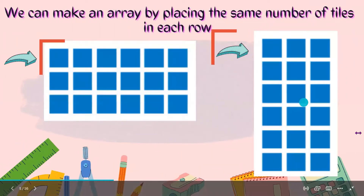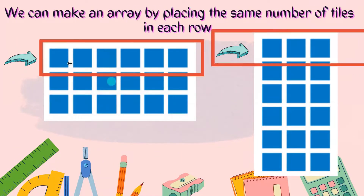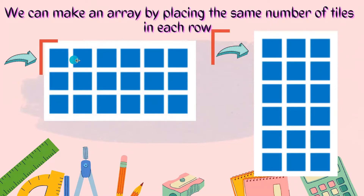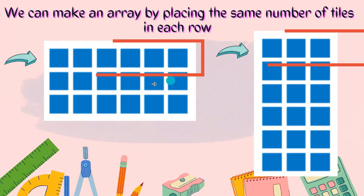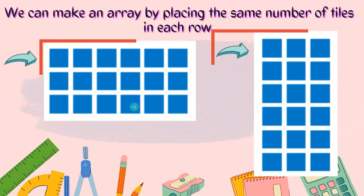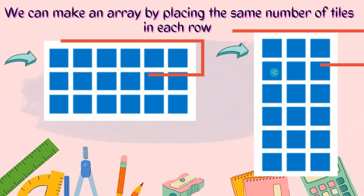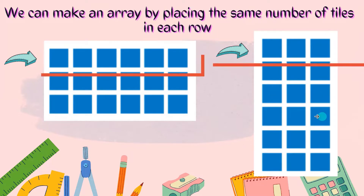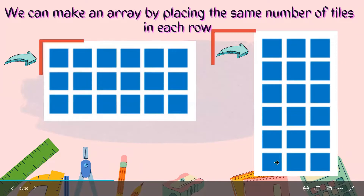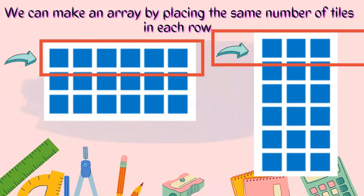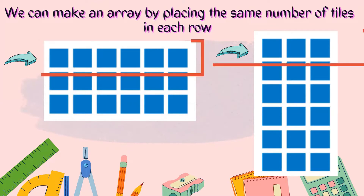These two that I have here are arrays. These arrays have one, two, three, four, five, six, seven, eight, nine, ten, eleven, twelve, thirteen, fourteen, fifteen, sixteen, seventeen, eighteen tiles. Wow — both arrays have 18 tiles!